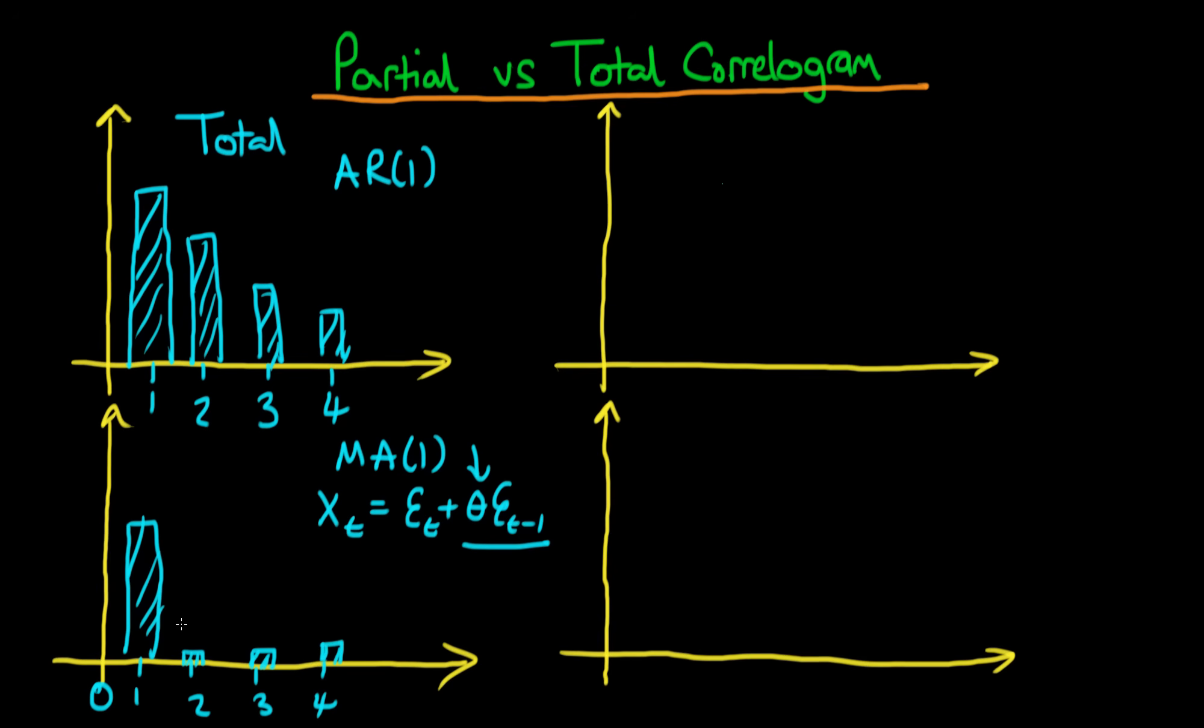Normally when you draw these things on statistical programs they will specify some sort of 95% confidence interval and each of these lags which are further away than one lag will not fall outside of that. Whereas for an AR1 process perhaps the 95% confidence interval might look something like that.